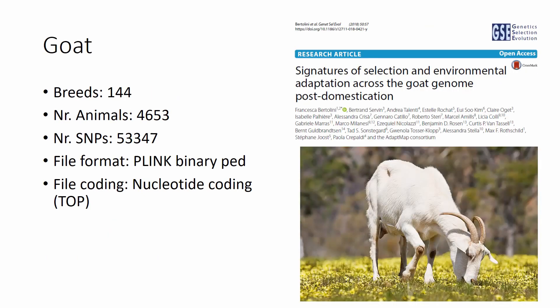We have our favorite goat genotypes from the ADAPTMAP — you might recognize this, as we use it on this channel a lot. It is from 144 breeds with more than 4,600 animals and more than 53,000 SNPs. It is binary BED format for PLINK with nucleotide coding, and in this case we know it uses top-strand coding SNPs.